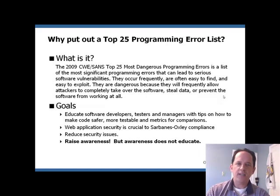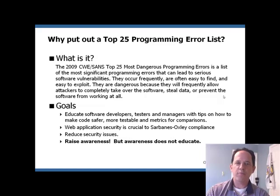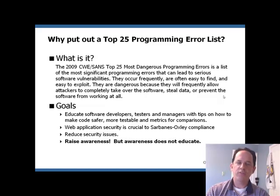What exactly is a Top 25 Most Dangerous Programming Error List? In a nutshell, this list is a complete list of the most significant programming errors that can lead to serious software vulnerabilities. These errors occur frequently, are very easy to find for attackers and developers alike, and also very easy to exploit. They are considered dangerous because they allow attackers to leverage these errors to steal your data and take over your software.